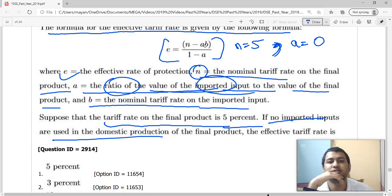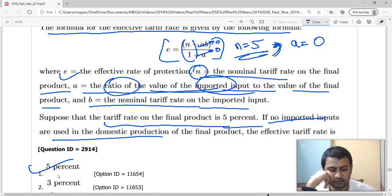When you put A equals to 0 here, this becomes 0, this becomes 0. So this becomes E equals to N. Now I have already given N to be equal to 5, so E becomes 5. That's your answer, 5 percent.